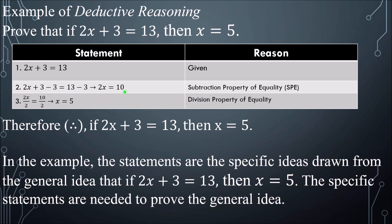Simplifying, we have 2x equals 10, because of the subtraction property of equality. Then we divide both sides by 2, and the reason is the division property of equality. Simplifying, we have x equals 5. Therefore, if 2x plus 3 is equal to 13, then x is equal to 5. We used specific information to prove the general idea, and that specific information came from the general idea itself. That is deductive reasoning.